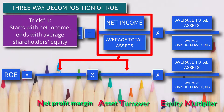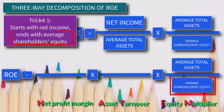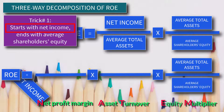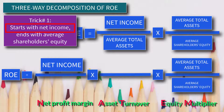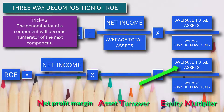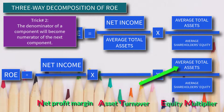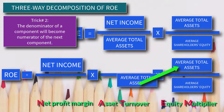Applying the first trick, we already comply with the rule that the formula should end with Average Shareholders' Equity. We need to add Net Income as numerator in the first component. Applying the second trick — the denominator of a component becomes the numerator of the next — since Equity Multiplier has a numerator of Average Total Assets, the second component will have a denominator of Average Total Assets.